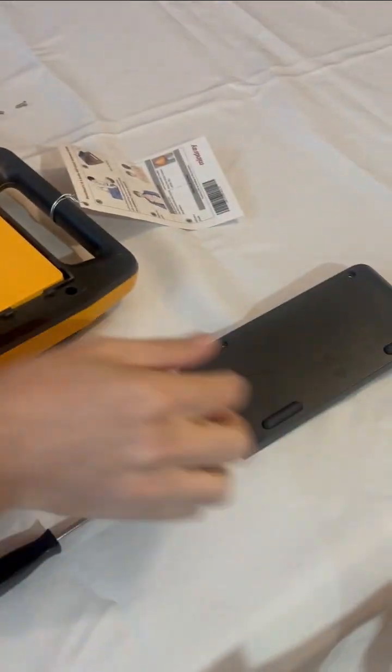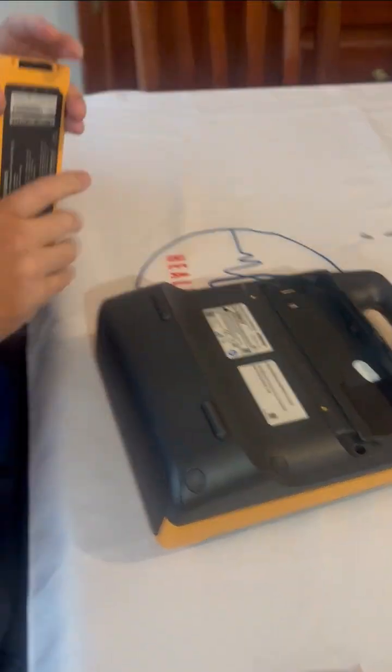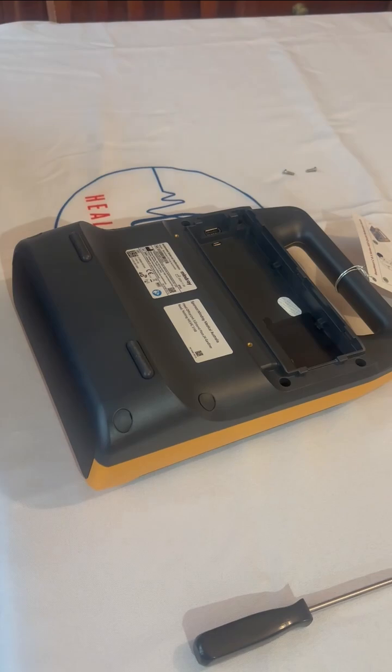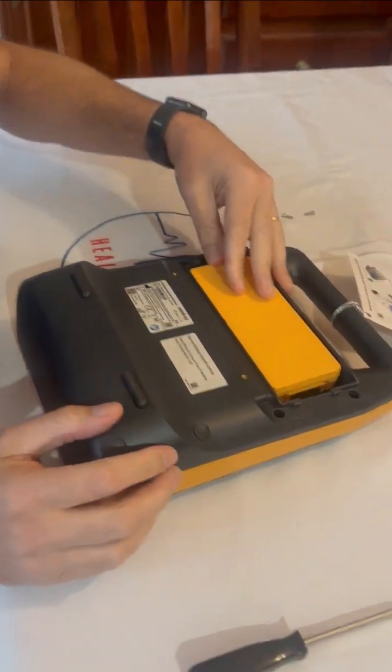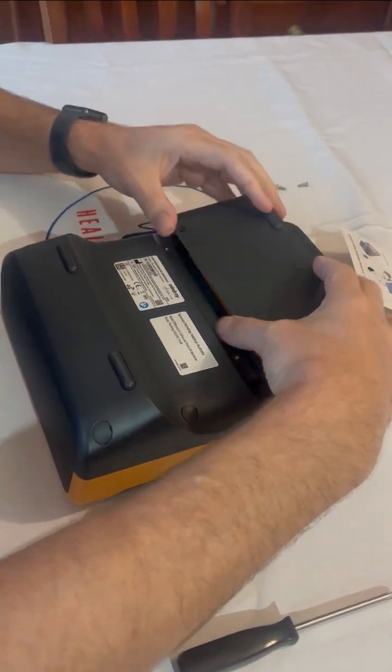Once the screws are removed, gently lift the cover to access the battery. Take your new battery and align it with the compartment. Slide it in securely, ensuring proper connection.